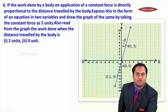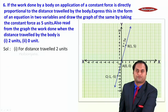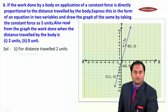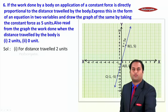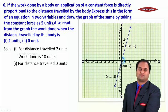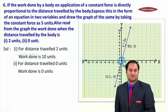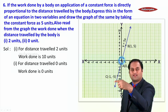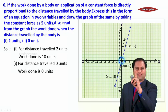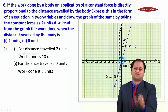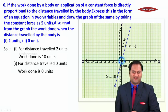After writing the equation, let us read from the graph. For distance = 2 units, draw a perpendicular from x = 2 on the x-axis up to the line, then draw a perpendicular from that point to the y-axis — wherever it intersects gives y = 10 units. So work done is 10 units. Similarly, for distance = 0, the work done is also 0 units. From 2 on the x-axis, go to the line, then to the y-axis — the answer is 10 for the first case and 0 for the second.